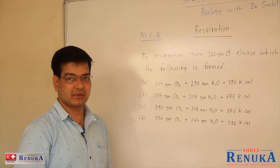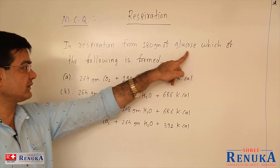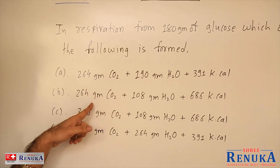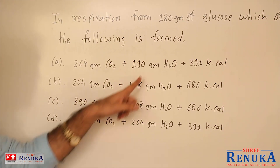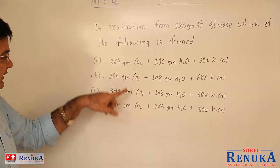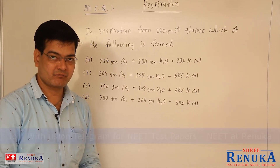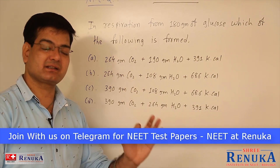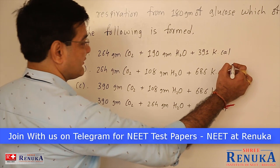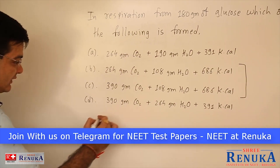The next question: in respiration, from 180 grams of glucose, which of the following is formed? The four options give certain grams of carbon dioxide and water. We observe that in options C and D, 686 kilocalories is given. From one molecule of glucose, always 686 kilocalories of energy is released. So our answer must be from B or C.